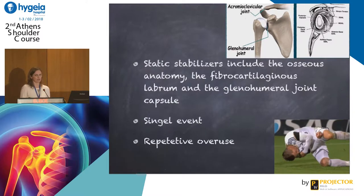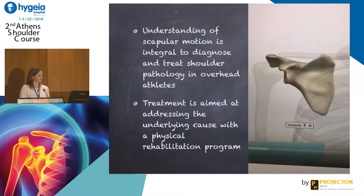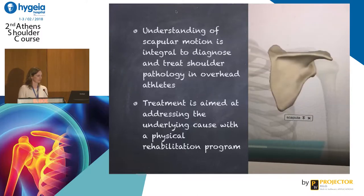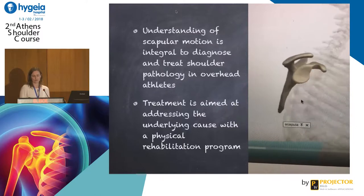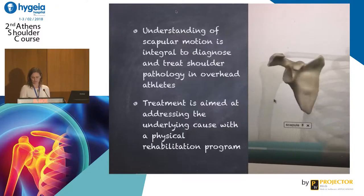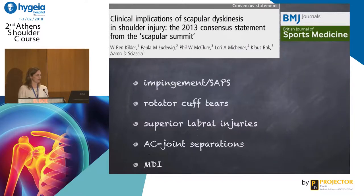Even though injuries might happen after a single event, most often in overhead athletes it is a result of repetitive overuse. Understanding scapular motion is integral to diagnosing pathology, and we have to address treatment to the underlying cause, which will most often mean a physical rehabilitation program. Ben Kibler shared a lot of his knowledge on this topic, and this report from 2013 represents a consensus on the clinical implications of scapular dyskinesis in shoulder injuries for different diagnoses.